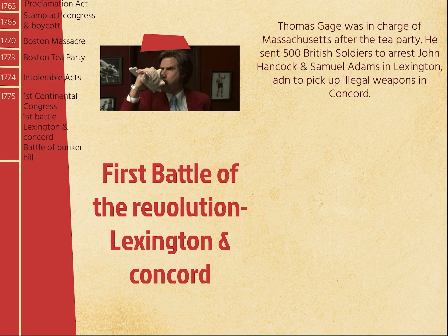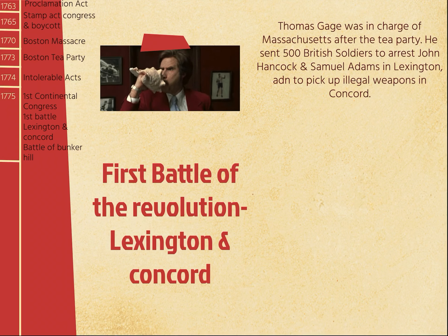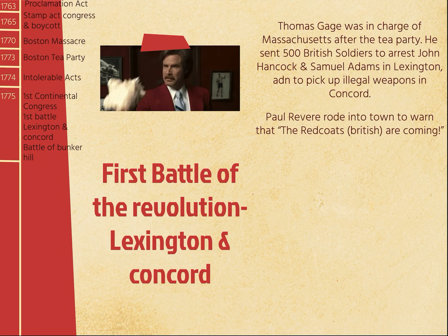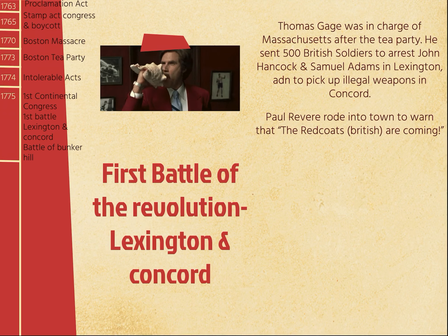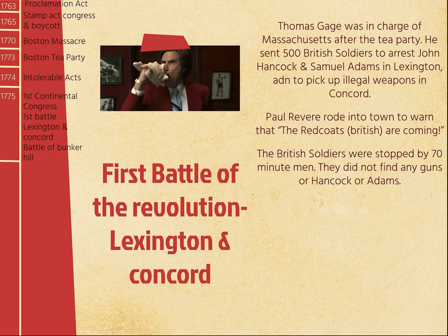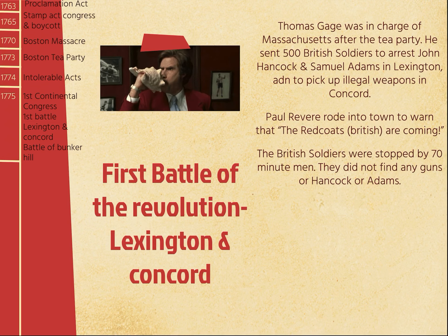Gage was in charge of Massachusetts. After the Tea Party, they put another commander in to make sure the colonists were behaving. He sent 500 soldiers to arrest two people — John Hancock and Samuel Adams, who were leaders of the Sons of Liberty in Lexington — and they were supposed to pick up illegal weapons in Concord. Paul Revere rode in to warn that the redcoats were coming. Really he said 'the redcoats are coming,' because Paul Revere was also British himself. The British soldiers were stopped by 70 Minutemen — a militia. They did not find any guns or Hancock or Adams.